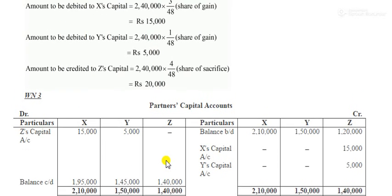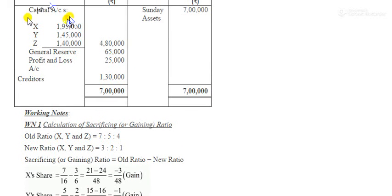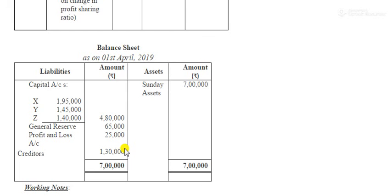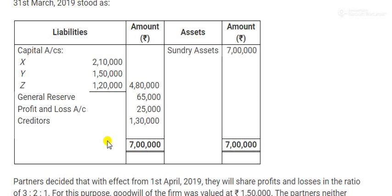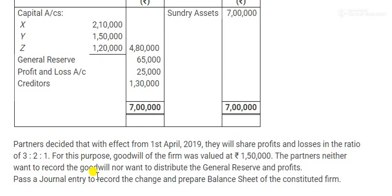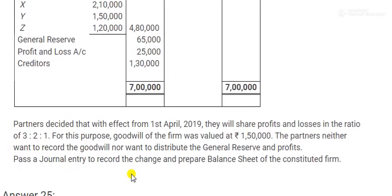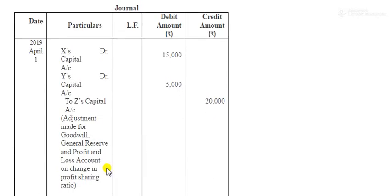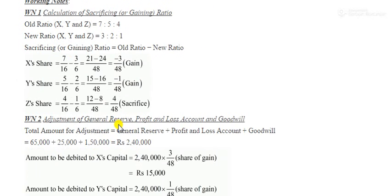These closing balances are transferred to the balance sheet on the liability side. When you put those capital values on the liability side and total the column — for example ₹80,000 — you can complete the balance sheet and match the total of seven lakh rupees. In review: assets and liabilities were given; partners didn't want to record goodwill — gaining to sacrifice; didn't want to distribute general reserve — gaining to sacrifice; didn't want to distribute profits — gaining to sacrifice.